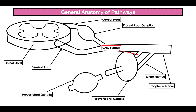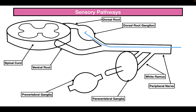Now let's take a look at the different pathways, starting with the sensory pathways. The sensory pathways are going to be governed by the sensory neurons. Sensory neurons, or afferent neurons, are going to take signals from the peripheral nervous system and bring them into the central nervous system. The sensory neuron comes in through the peripheral nerve and through the dorsal root ganglion.